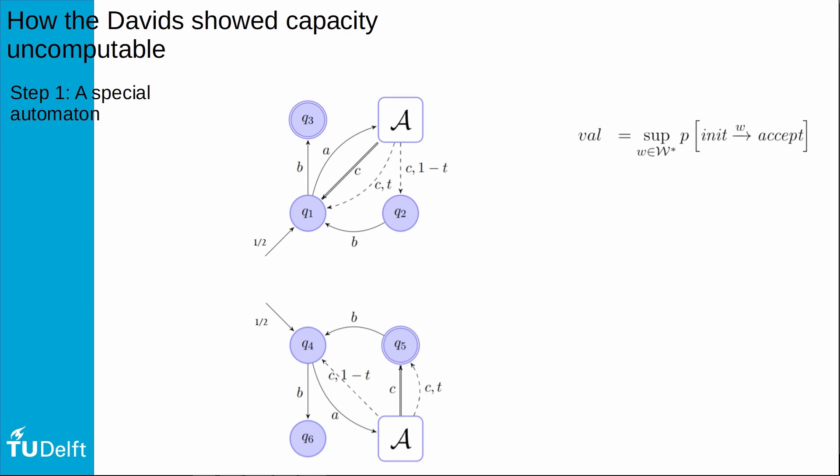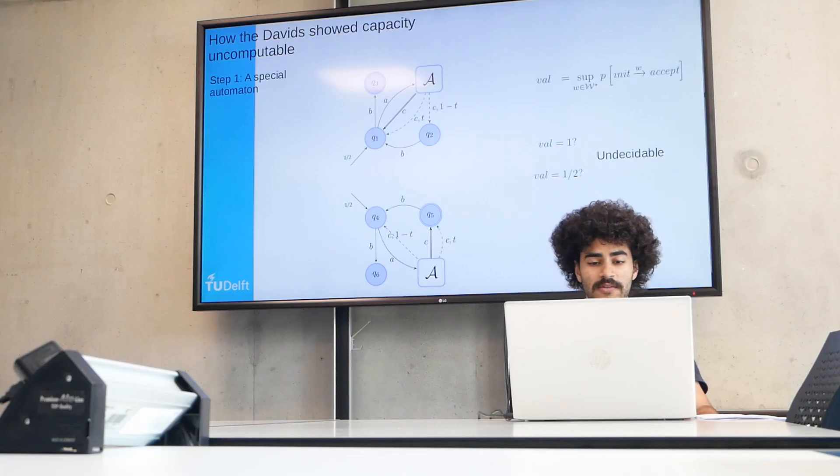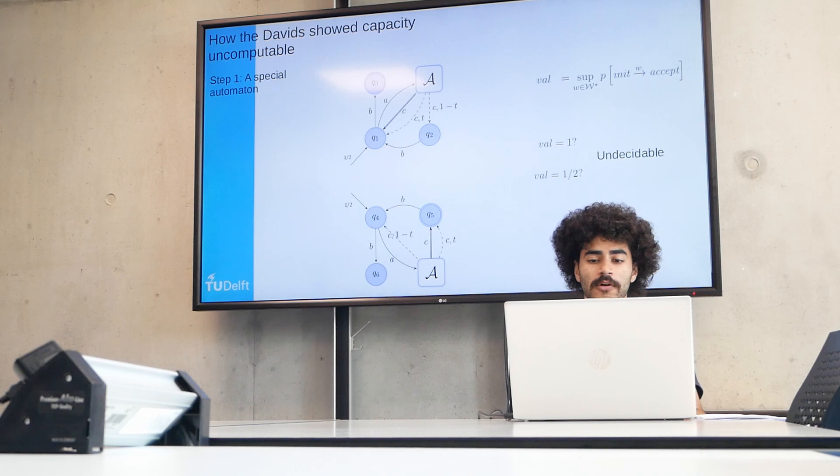And for this particular construction, what's so great about it is that it is undecidable whether the value is one or half. And that's what the Davids used to build channels with uncomputable capacity.